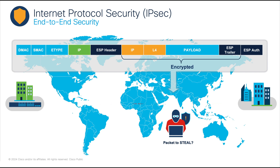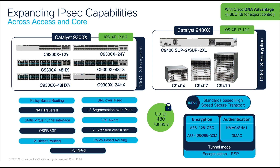Now, envision having this capability in your switch, enabling secure connectivity to any remote site anywhere, providing an ideal infrastructure for streamlined lean branch deployments. The Catalyst 9000's native IPsec journey commenced with the UADP 2.0 SEC ASIC on the 9300X, then progressed onto the 9400X with the UADP 3.0 SEC ASIC, enabling secure connections to branch sites and the cloud. These platforms can achieve an impressive throughput of 100 gigabits per second of hardware-based encryption, courtesy of the advanced crypto engine.